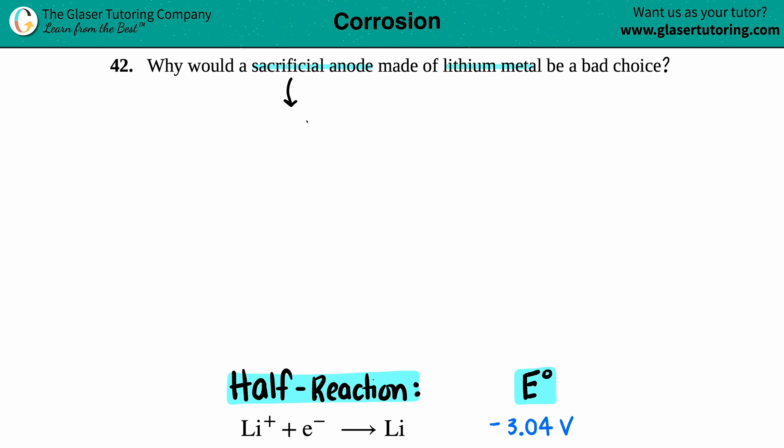A sacrificial anode is basically an anode that you pick to make another metal not the anode. You're sacrificing one metal to be the anode so that the other metal that you want to protect is the cathode.